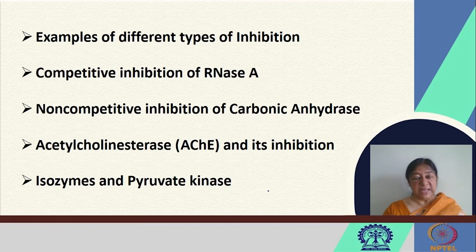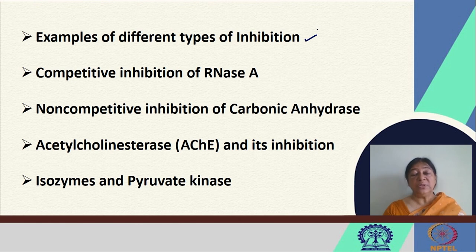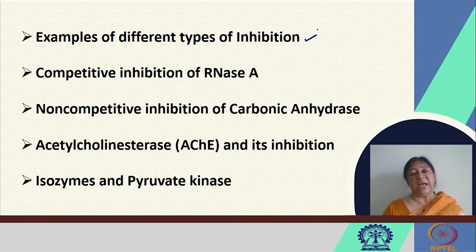In this lecture, we looked at examples of different kinds of inhibition with specific examples: the kinetics associated with them in Lineweaver-Burk plots, how increasing inhibitor concentration results in varying Vmax values for non-competitive inhibition and varying Km values for competitive inhibition. We also looked at acetylcholinesterase with irreversible inhibition due to covalent bond formation with serine 200, phosphorylated in a manner that prevents nucleophilic attack on the substrate. Finally, we looked at isozymes with the specific example of pyruvate kinase and its mode of action.